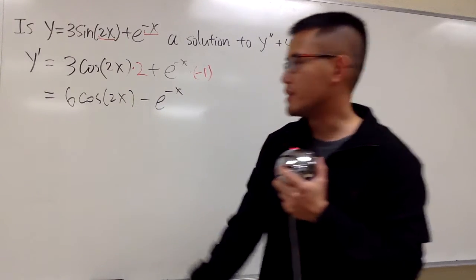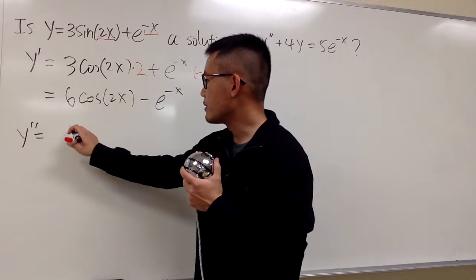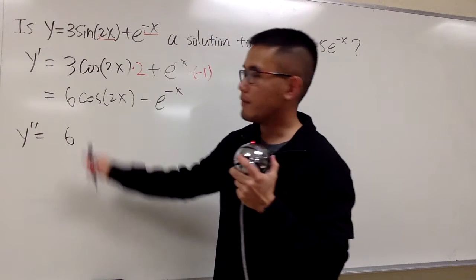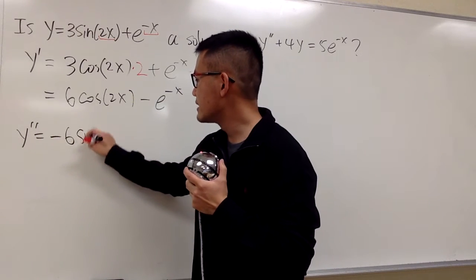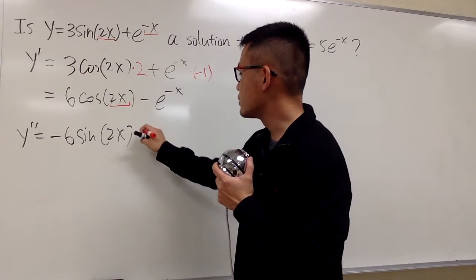And now, let's get the second derivative. Right here, y double prime. Let me bring down the 6 first. And the derivative of cosine is negative sine. And the input stays the same for now. And the derivative of 2x is once again 2.